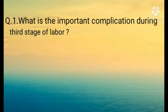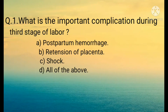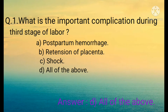Hello, welcome back to RBM Secure Bank Knowledge Booster. Let's start with the first question: What is the important complication during the third stage of labor? Options are: A) Postpartum hemorrhage, B) Retention of placenta, C) Shock, D) All of the above. The correct option is D) All of the above — these are the complications which can occur during the third stage of labor.